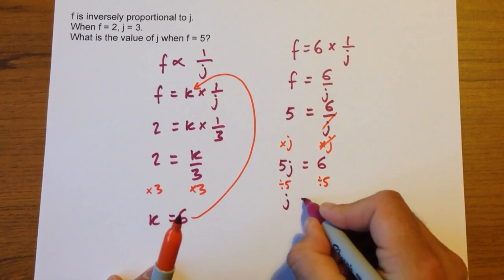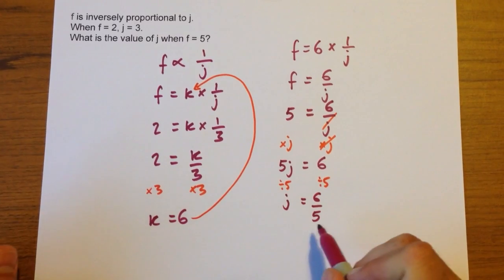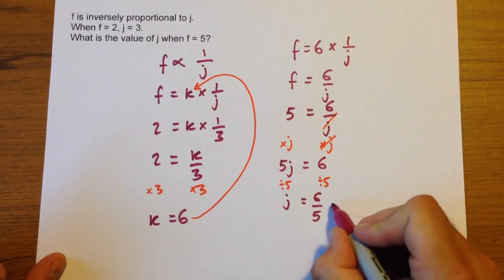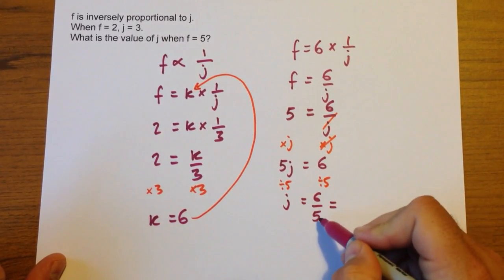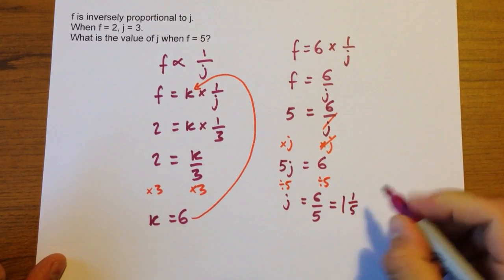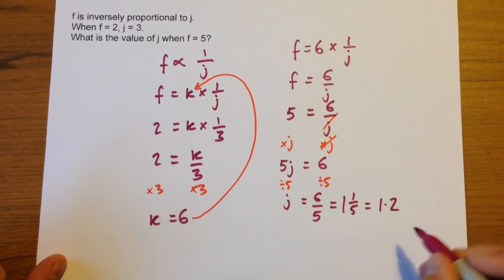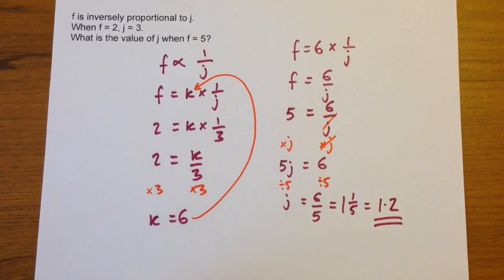Which tells us j equals 6 divided by 5, and that would be perfectly acceptable to leave the answer like that, but I'm going to show you how you would convert it. 6 fifths is the same as 1 and 1 fifth, and 1 fifth as a decimal you should know is 0.2, so that would be 1.2 as a decimal.